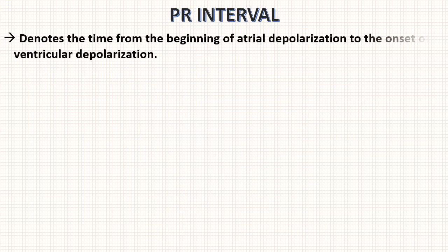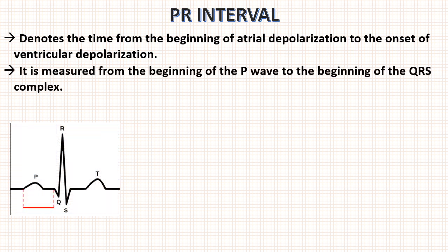First is PR interval. It denotes the time from beginning of atrial depolarization to the onset of ventricular depolarization, i.e. time taken for impulse to reach the ventricles. It is measured from beginning of P wave to the beginning of QRS complex. Normal PR interval is 0.12 to 0.20 seconds.